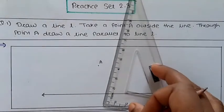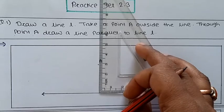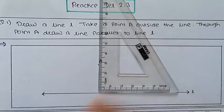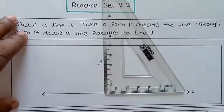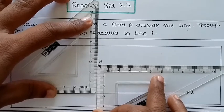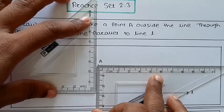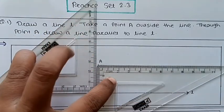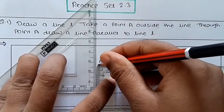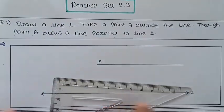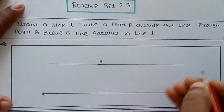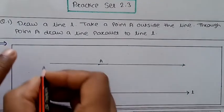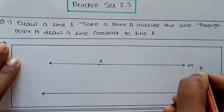So how to draw this — we have already studied that we have to put the set squares like this. Put the first set square and the second set square. Now draw the line from the second set square like this, and this line extends here.